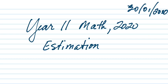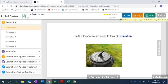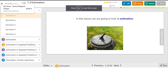Sometimes it's not convenient to work with numbers as they're given — sometimes you want to make an estimate, and sometimes you have to. For example, if I want you to measure the length of this room and you don't have a measuring tape, you could estimate it. Sometimes estimations are used instead of the true numbers.